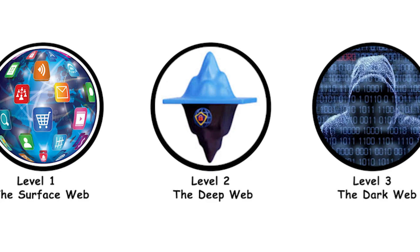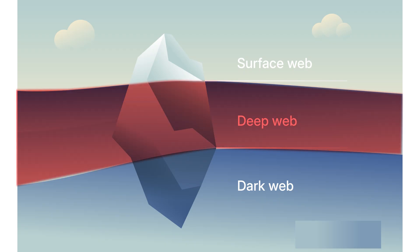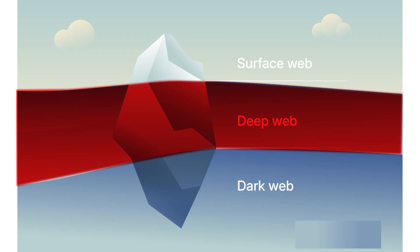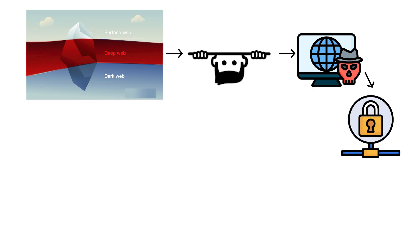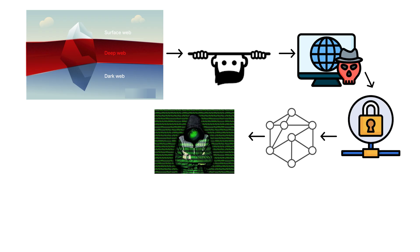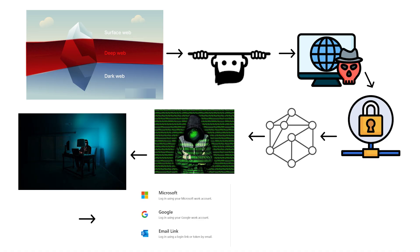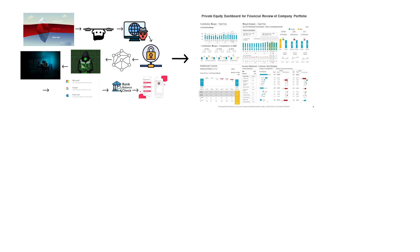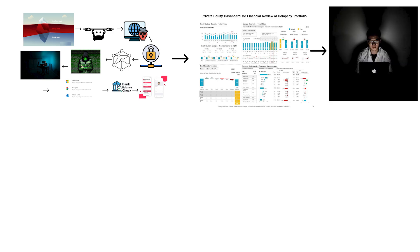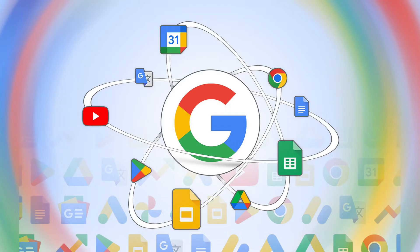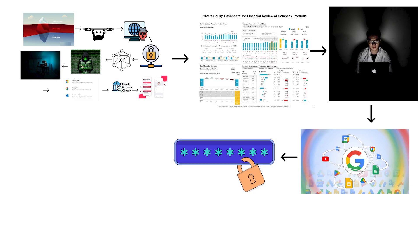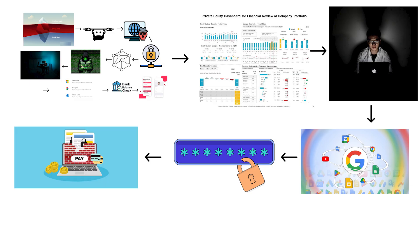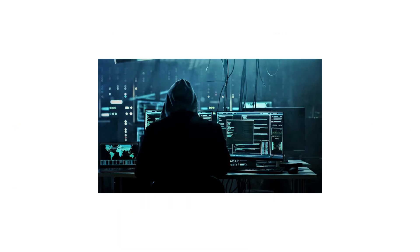Level 2: the deep web. Now we leave the sunlight. The deep web is everything beneath the surface — hidden but not forbidden. It's the private internet, the infrastructure that keeps modern life running quietly in the background. Every time you log into your email, check your bank balance, open your medical records, or access a private company dashboard, you're already in the deep web. These pages don't appear on Google because they're locked behind logins, paywalls, or encryption. They're not dark — they're just closed.